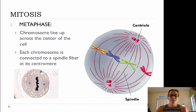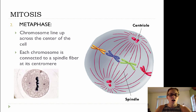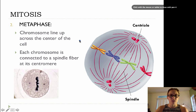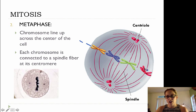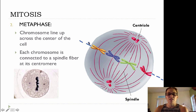After prophase is metaphase. Metaphase is probably the easiest of the phases to identify in a picture because all the chromosomes are lined up nice and pretty along the midline or across the center of the cell. This is the metaphase plate — we've got our chromosomes all lined up so nicely along our metaphase plate.